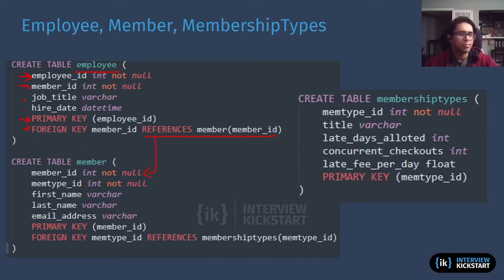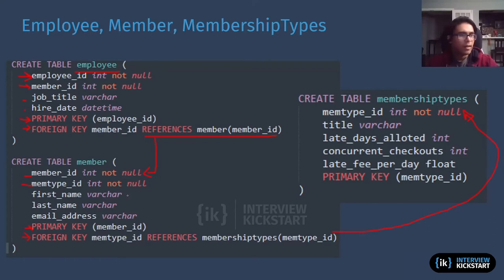That's employee. Member — pretty standard DDL statement here. Your primary key is your member ID, which is the first one. Your membership type ID is a foreign key here, and this is what's going to refer to the membership types primary key there. Then some other attributes: first name, last name, email address, and so on.